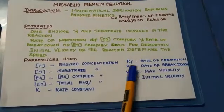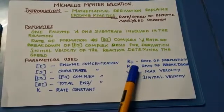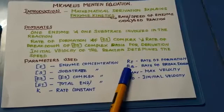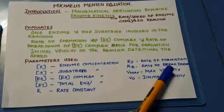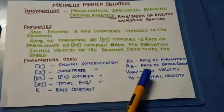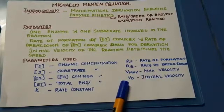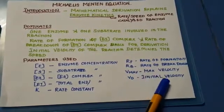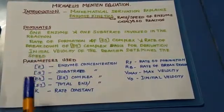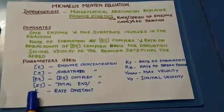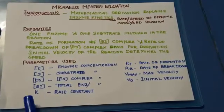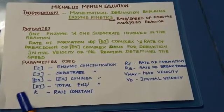I have used RF and RB in this derivation. RF is the rate of formation of the ES complex, and RB is the rate of breakdown of the ES complex. Vmax is the maximal velocity, and V0 is the initial velocity. With this basic information, I will be deriving the Michaelis-Menten equation, and you can follow the full derivation in the Part 2 video.